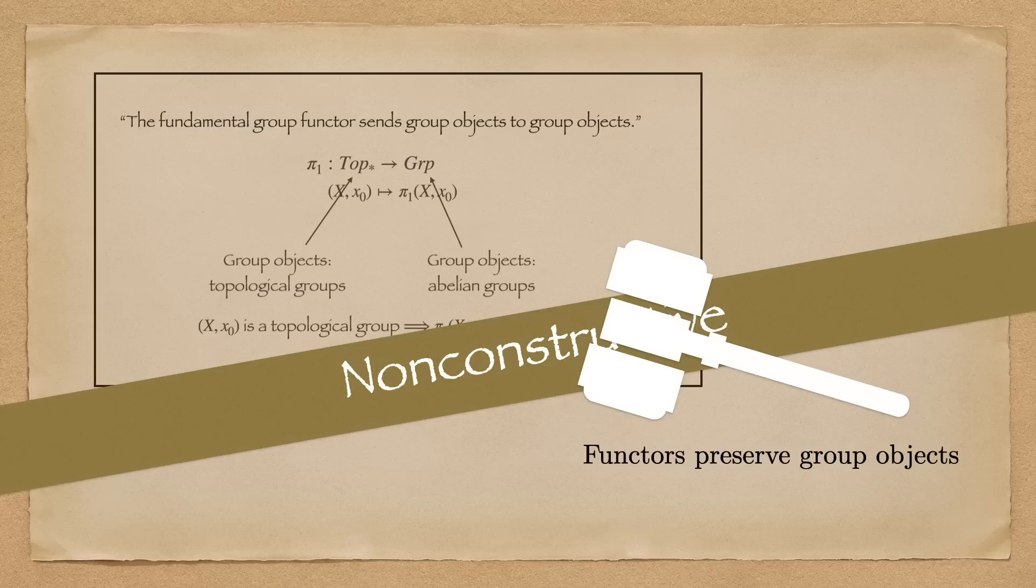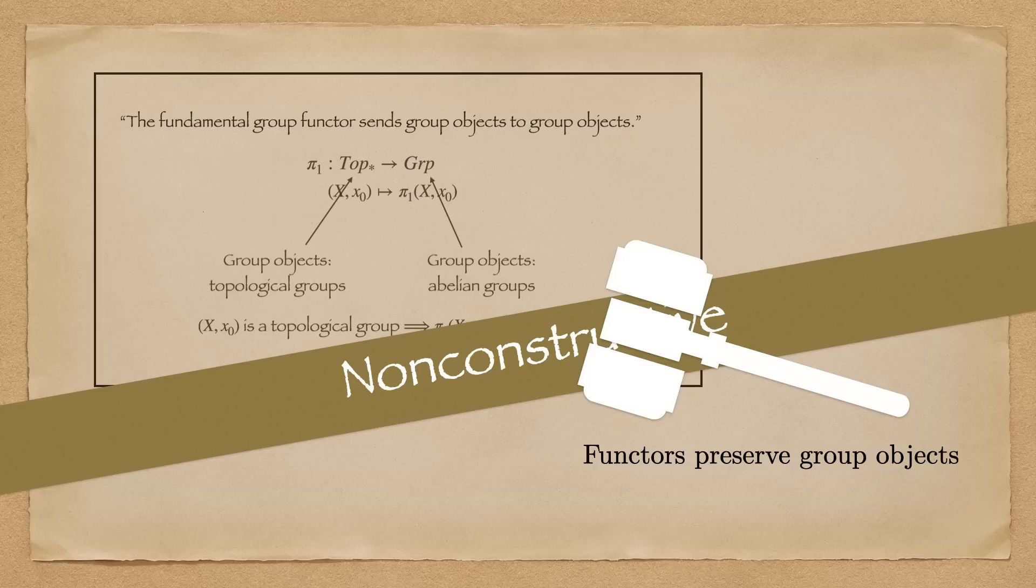In our case, we simply whack our proof with a big hammer called functors preserve group objects. But to prove this hammer, we have to go into the nitty-gritty details. So while uncovering the structure and the foundation of the objects we're working with, proofs by category theory are often non-constructive.